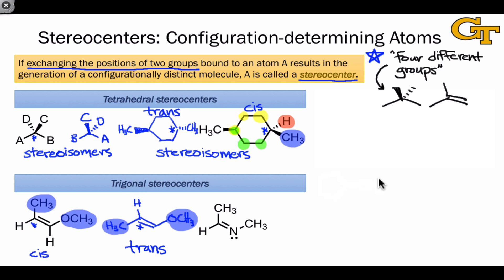Alkenes aren't the only groups that can engage in stereoisomerism. Amines, which include a carbon-nitrogen double bond, can also engage in stereoisomerism, and the nitrogen can be considered a stereocenter. Exchanging the positions of the lone pair and the CH3 group results in a molecule that is a stereoisomer of the original,